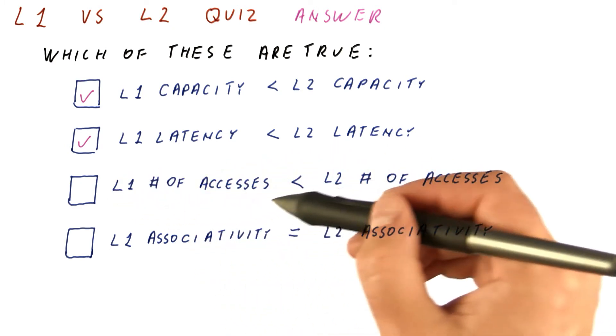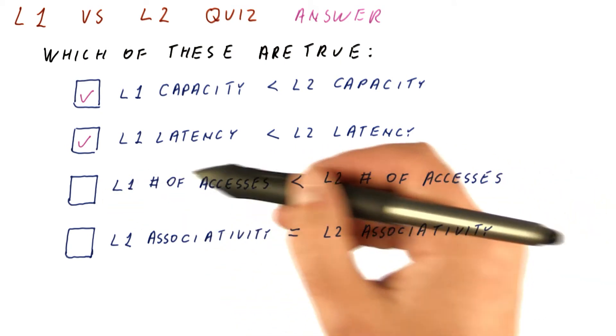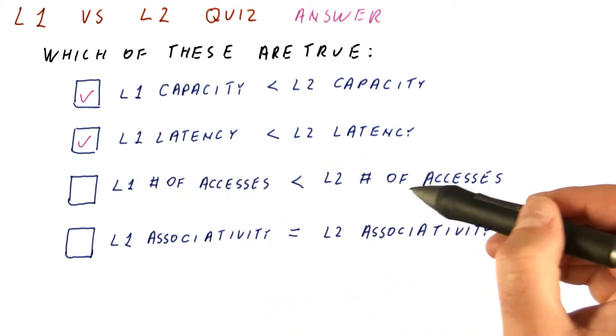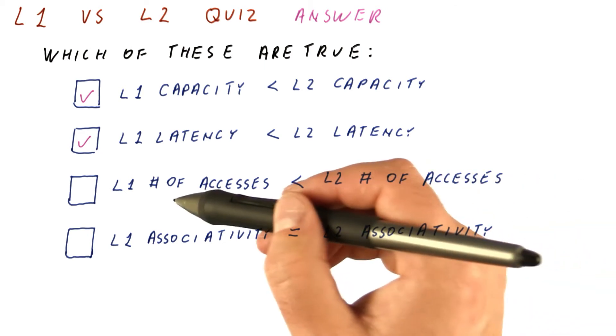All of the accesses, loads and stores, go to L1 cache, but only those that miss in L1 cache go to L2 cache. So the L2 cache usually has a lot fewer accesses than L1.